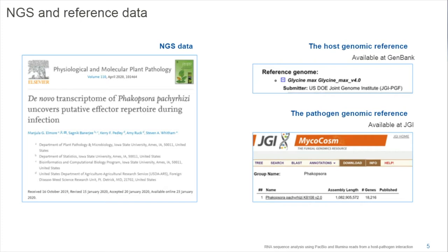The NGS sequence files I'm using come from a publication by Elmora and co-authors, published in 2020 in Physiological and Molecular Plant Pathology. The data files are available at the GenBank Short Read Archive, the soybean genomic sequence is available from GenBank, and the pathogen genomic sequence is available at the JGI MycoCosm database and can be downloaded from there.